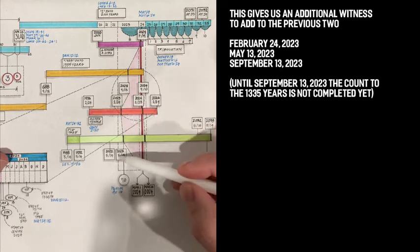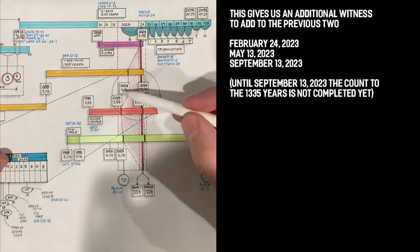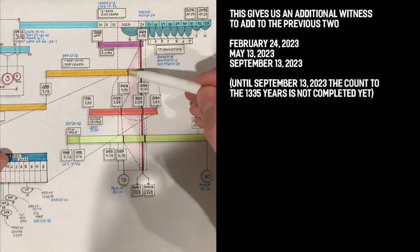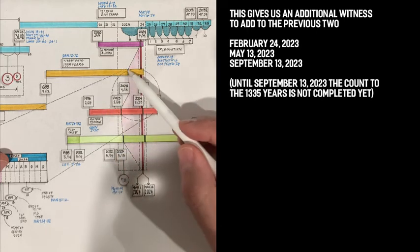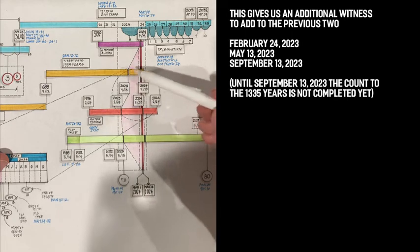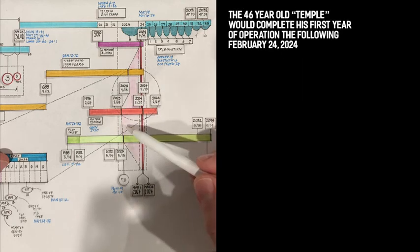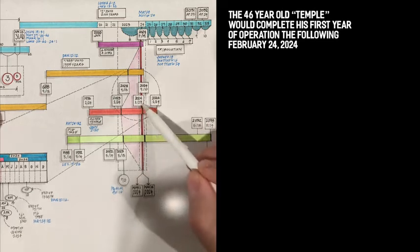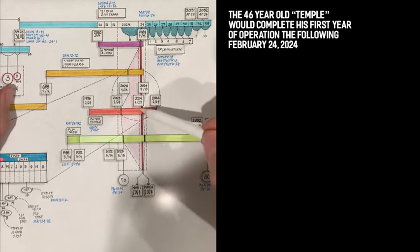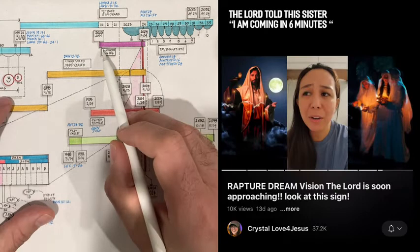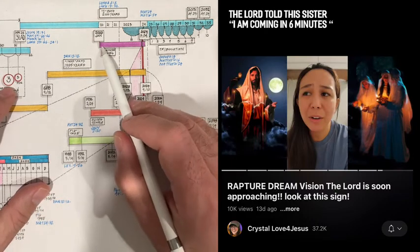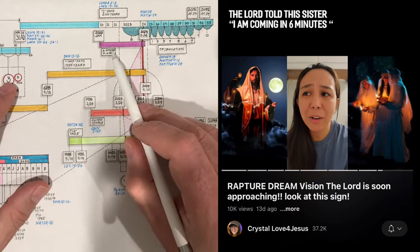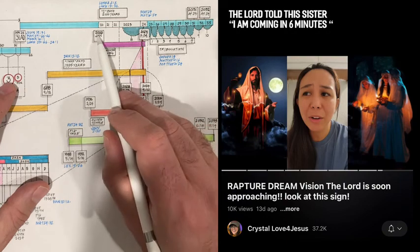So first witness, September 24th with Arari's birthday. And then we have May 13 with Israel's birthday. And then September 13 with the 1335 years coming to a completion or a start of the 1335th year. So until September 13, the 1335 years haven't really passed. So now we have three witnesses starting September 13. Then as we move on, we would have the temple completed in the 71st year all the way to February of the following year, 23 of February 2024. That will be the first year completed of the temple in operation.